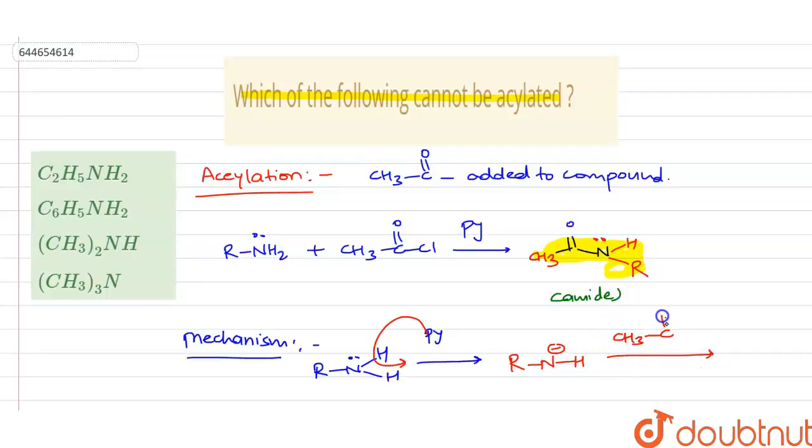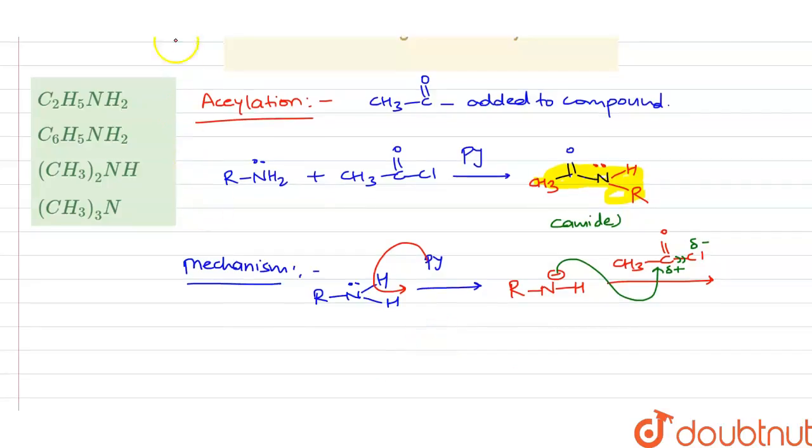carbon. And by this, what we will get? We will get the tetrahedral intermediate. It will be like this: NHR. Now what happens further? There will be expulsion or release of chloride ion, and at last we get